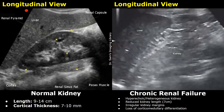This image shows chronic renal failure, the final stage of chronic kidney disease — stage 5. The kidney is barely visible and mostly appears hyperechoic and heterogeneous with a reduced size. It also has irregular margins, and there is loss of corticomedullary differentiation.